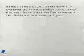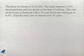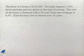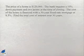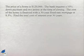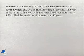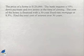Now let's continue with our problem about buying a new home by finding how much interest has been paid. The price of a home is $120,000. The bank requires a 10% down payment and two points at the time of closing. The cost of the home is financed with a 30-year fixed-rate mortgage at 8.5%. Find the total cost of interest over 30 years.